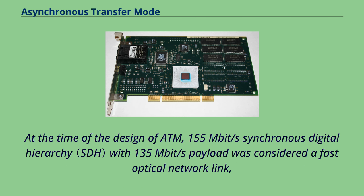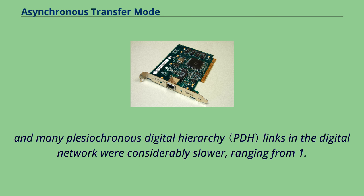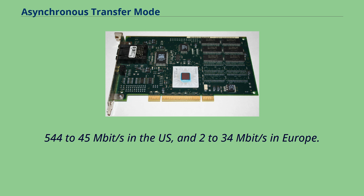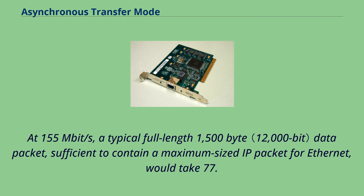At the time of the design of ATM, 155 Mbps synchronous digital hierarchy with 135 Mbps payload was considered a fast optical network link. Many plesiochronous digital hierarchy links in the digital network were considerably slower, ranging from 1.544–45 Mbps in the US and 2–34 Mbps in Europe. At 155 Mbps, a typical full-length 1,500-byte data packet — sufficient to contain a maximum-sized IP packet for Ethernet — would take 77.42 microseconds to transmit.